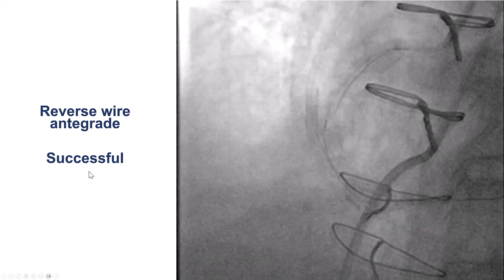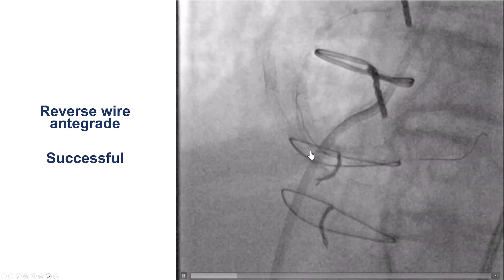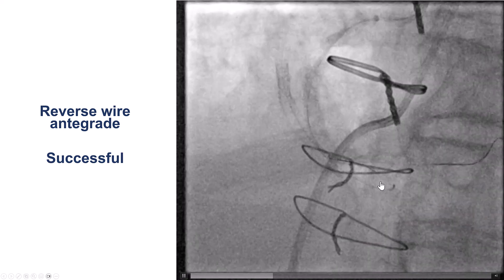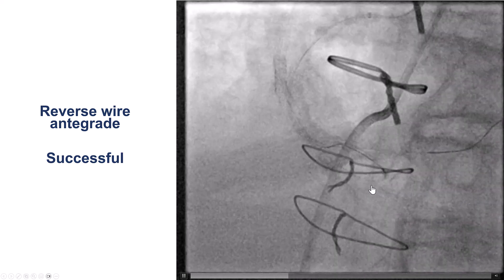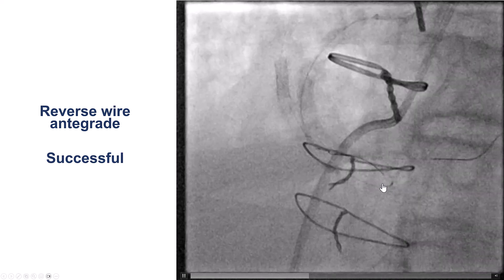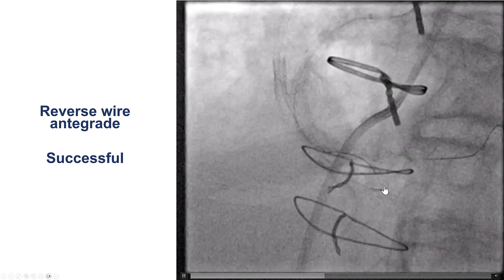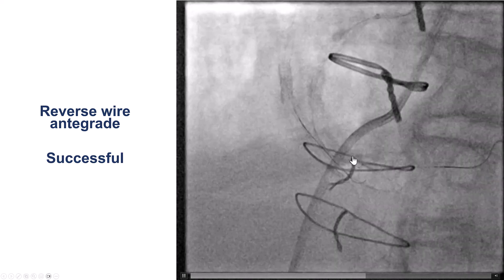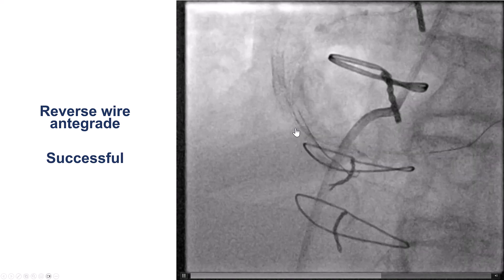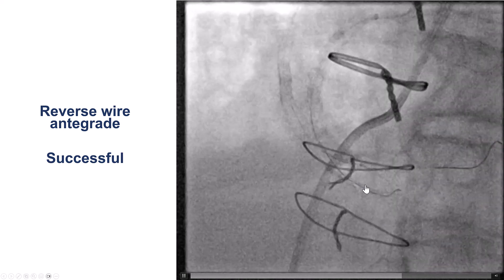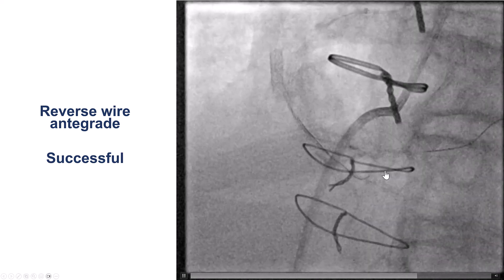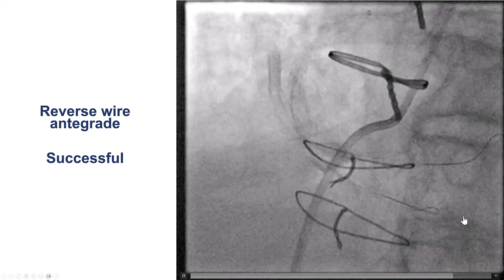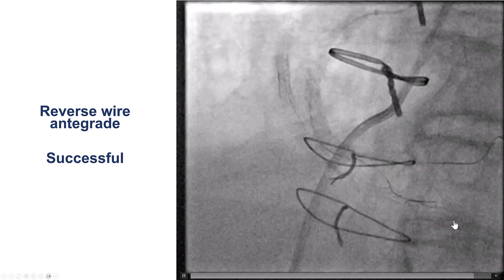So we decided to use the reversed guide wire technique. We had a looped polymer-jacketed guide wire — a Sion Black — advanced over the Sasuke dual-lumen microcatheter inside the occluded saphenous vein graft, trying to get the knuckled Sion Black across the touchdown. It was a little tough at the touchdown, but eventually the knuckle went all the way up. We then backed away the Sasuke and pulled back the Sion Black. Initially it wanted to go back to the proximal PDA, so we pushed it back in, rotated it a little, and eventually it knuckled and went into the PDA.